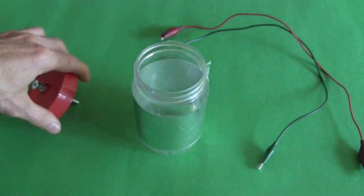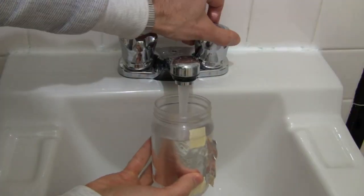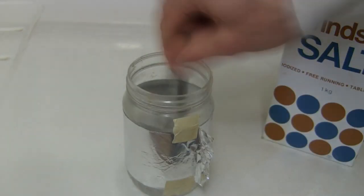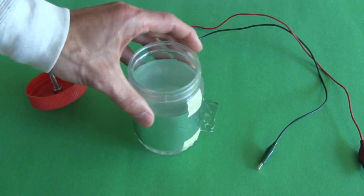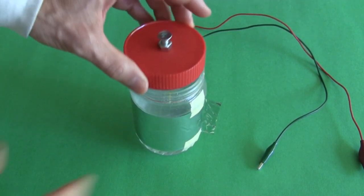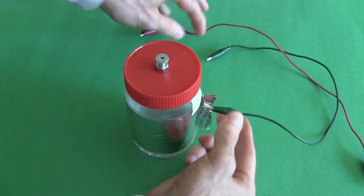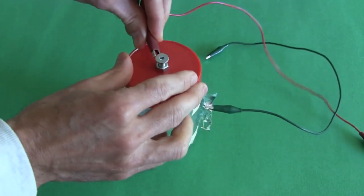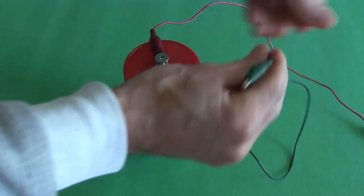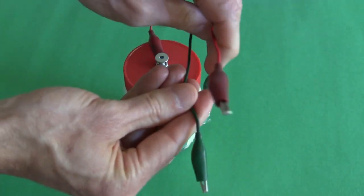Next, we fill it up with salty water. Put the top on, connect one lead to the foil, connect the other lead to the bolt sticking out of the top, and then connect the other two leads to your circuit.